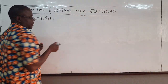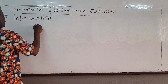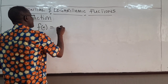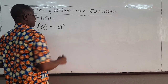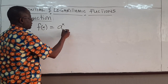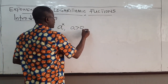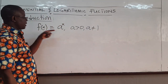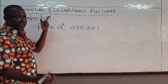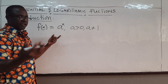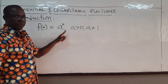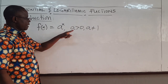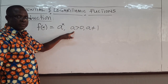So exponential functions is really, as the name suggests, a function. Any function f of x that is of the form a raised to the power of x is an exponential function, if a here is greater than 0 and a is not equal to 1. If a is 0, this goes to 0, so that is a constant function. If a is 1, it's the same thing — you're going to get 1. So we require that a must be positive and it should not be equal to 1.